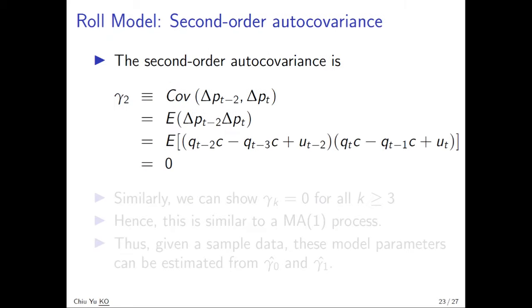Now finally we want to show the gamma two is equal to zero. And the idea is same. I'm not going to show it. You can easily check it. And you can easily show that more than three is also equal to zero.